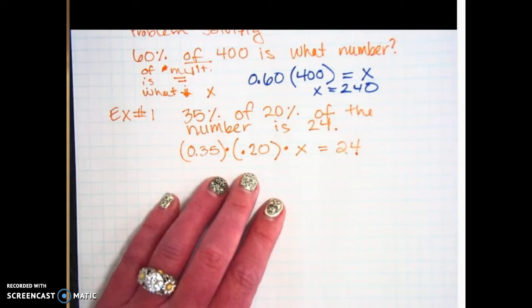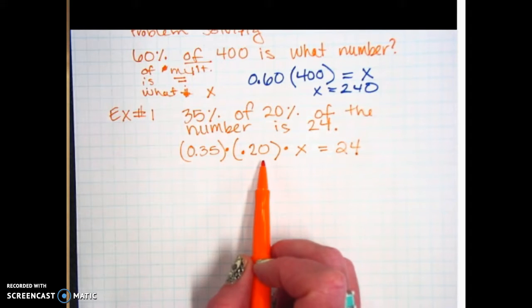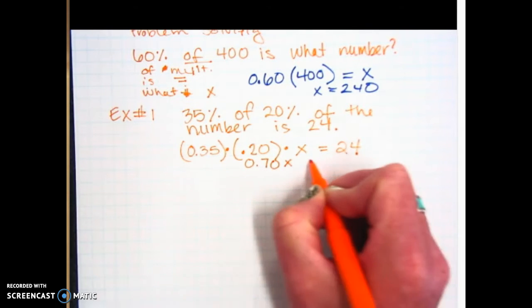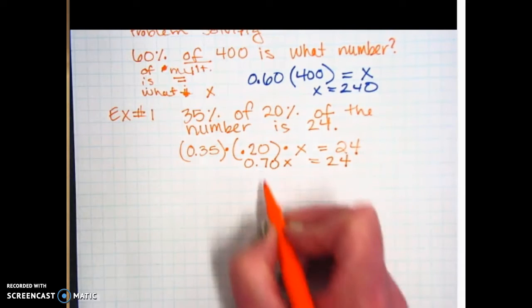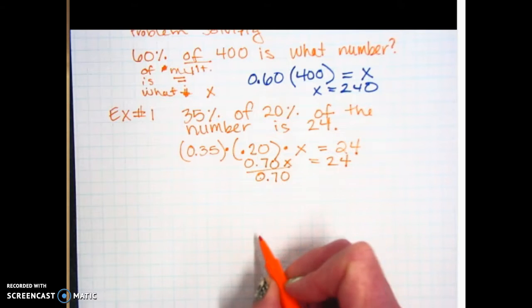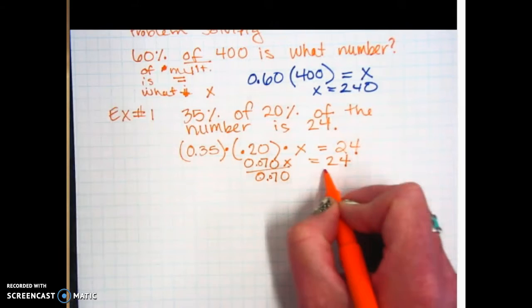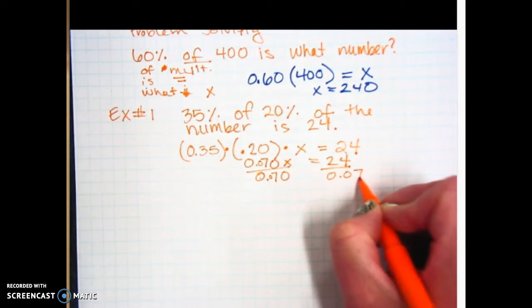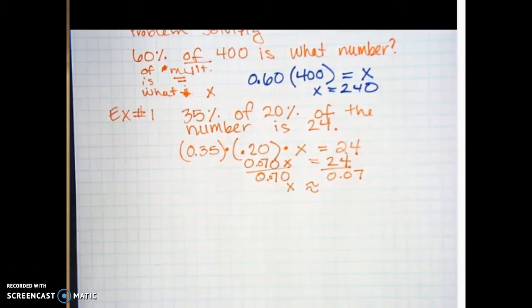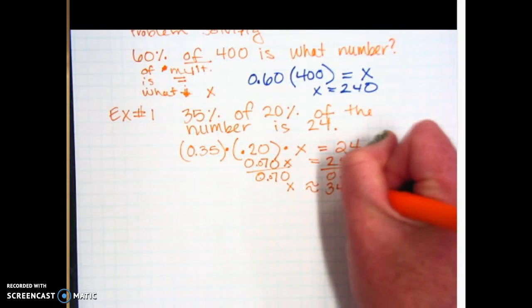At this point, most of you are going to need a calculator. So you're going to take your calculator, multiply 0.35 times 0.20. I got 0.070 X equals 24. Divide both sides by 0.07. I'm going to put the approximately equal sign, because I rounded, because it was this big long decimal. I got roughly 342.9.